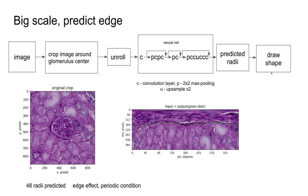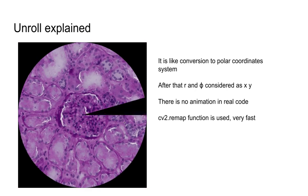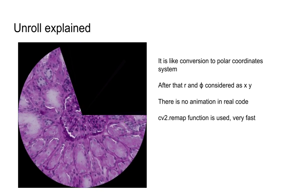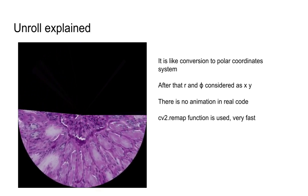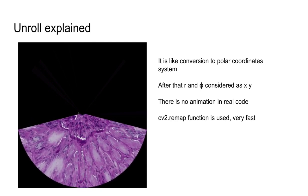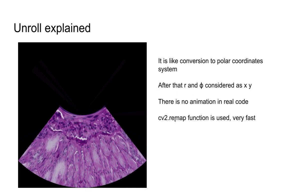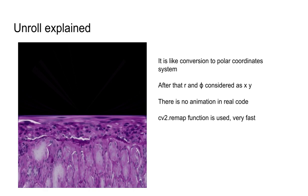After that we can draw a shape of the glomerulus. Here is the unrolled plane — first we have a crop, and then we start to unroll it. Now we make a rectangle image. Of course this is just for animation; in the real code it is implemented as a remap function and runs very fast.